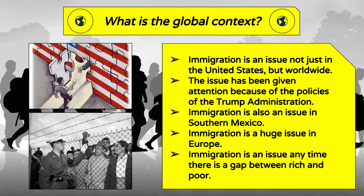What I want you to understand by the time we get done with this entire unit is that immigration is an issue anytime there is a gap between rich and poor. We're going to go into that in great detail, but this is your broad overview. And I'm going to go ahead and change the slide.